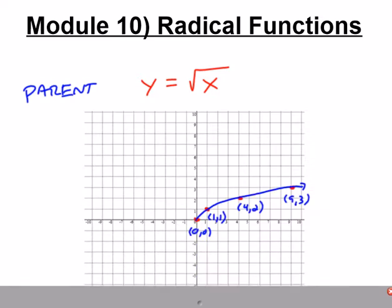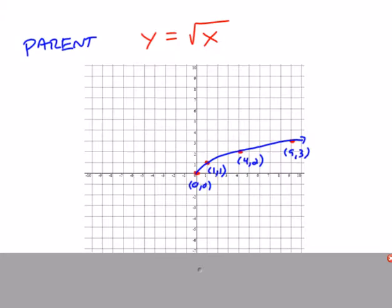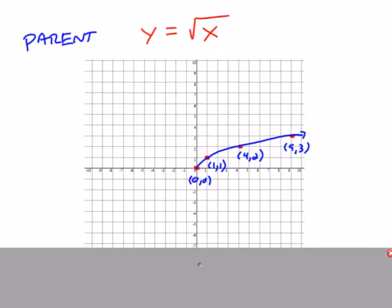The square root function parent function, meaning if I were to just take the square root of x, would have this shape here. Since a square root is the inverse of a square and a quadratic function looks like a parabola, you could even see the workings of a parabola, just turned sideways.